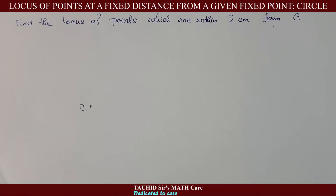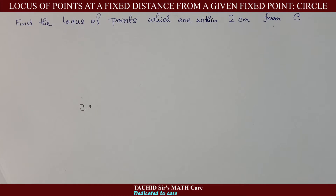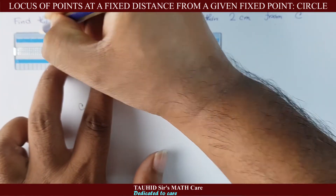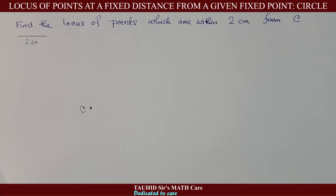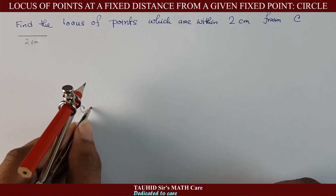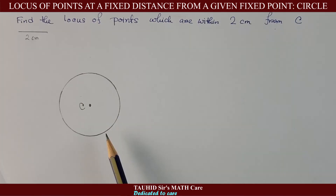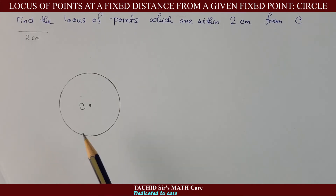Now you are asked to find the locus of points which are within two centimeters from C. You are given a fixed point C, and you need to draw the locus of all points which are within two centimeters of this point. First, we draw a straight line of two centimeters, then take that as the radius, and draw a circle with center C and radius two centimeters. All points on the circumference of this circle are two centimeters away from point C.